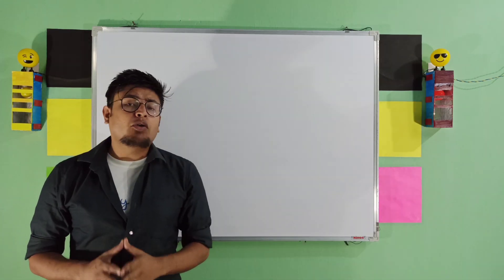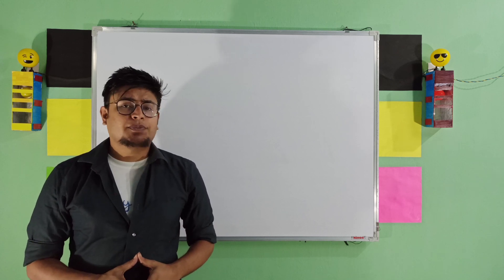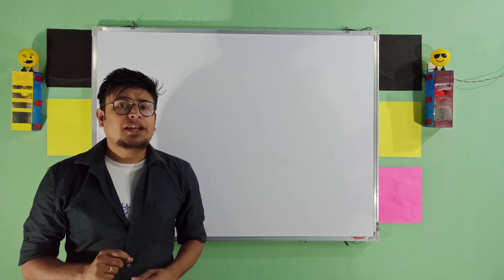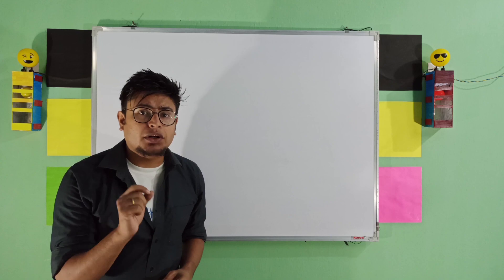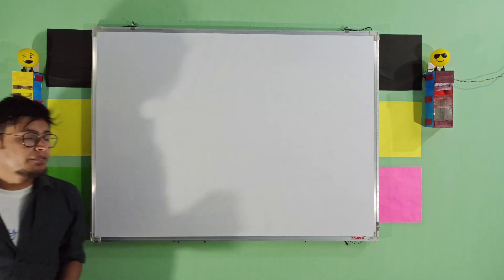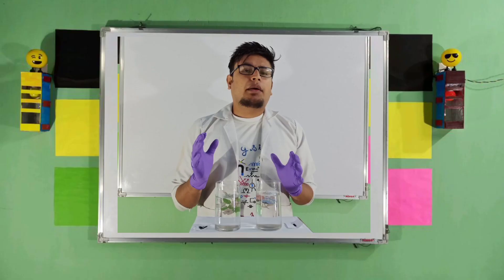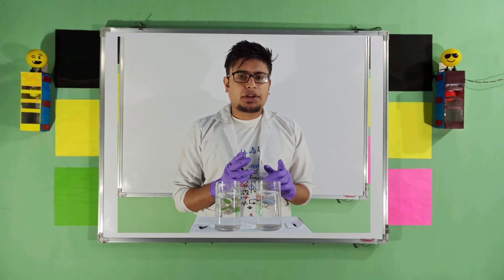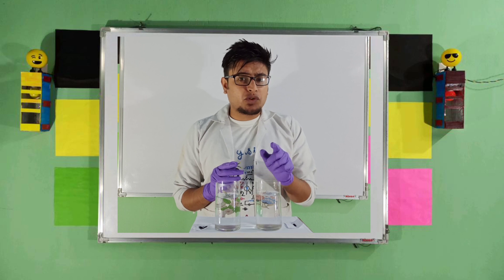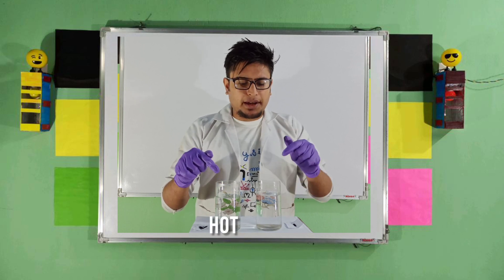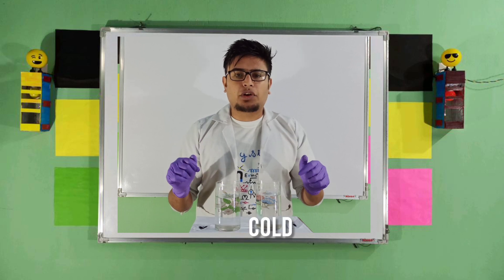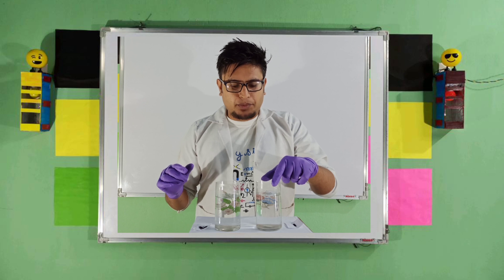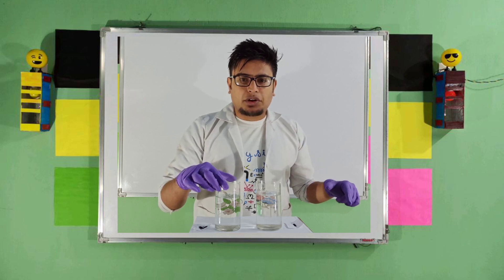Now let us look into one such experiment of Brownian motion as well as diffusion in case of water. I am going to give you a demo of Brownian motion as well as diffusion using hot water and cold water. This is a chilled water and this is a hot water.